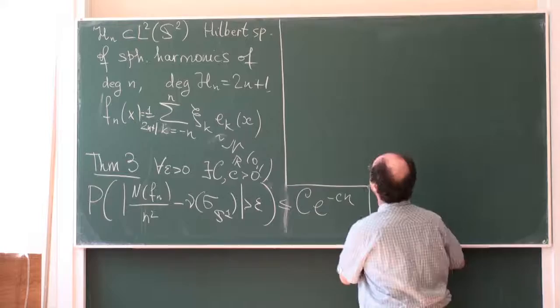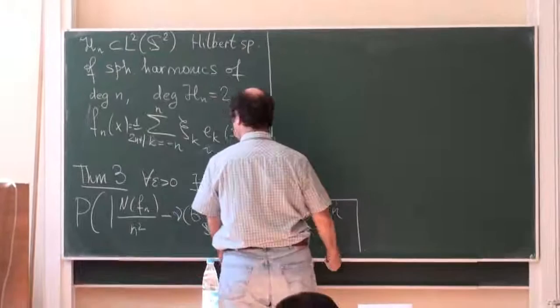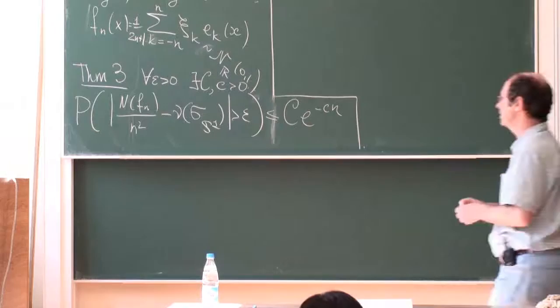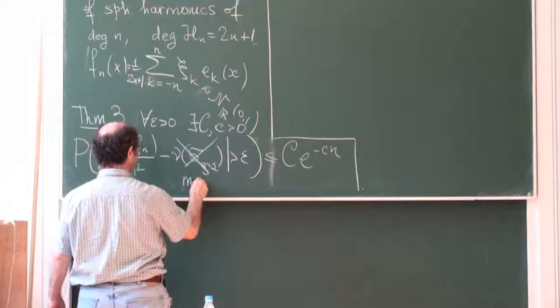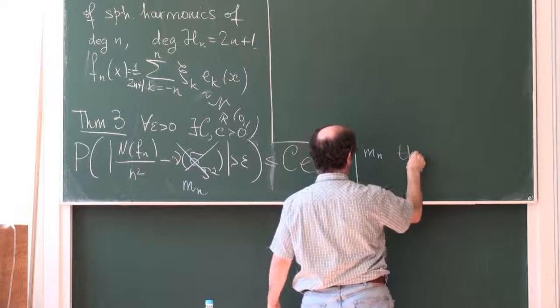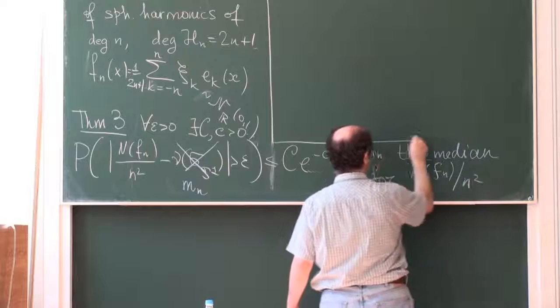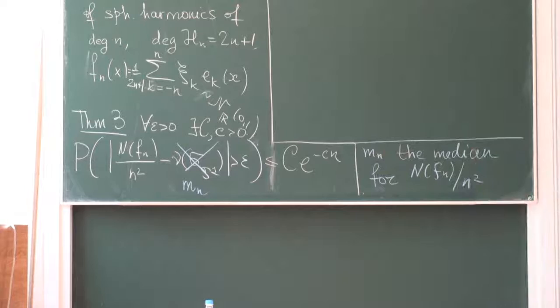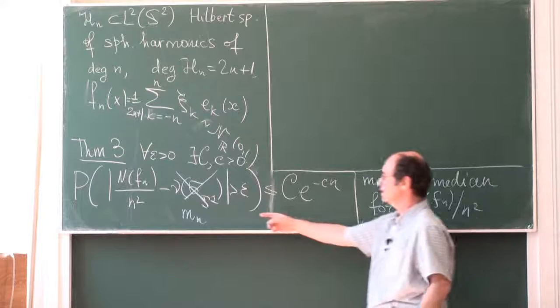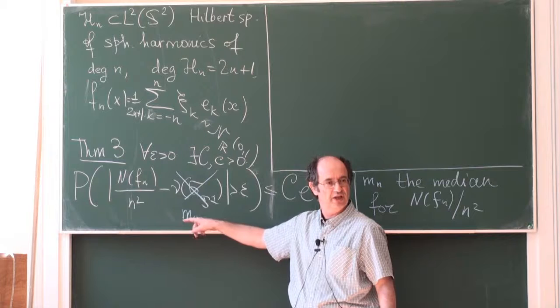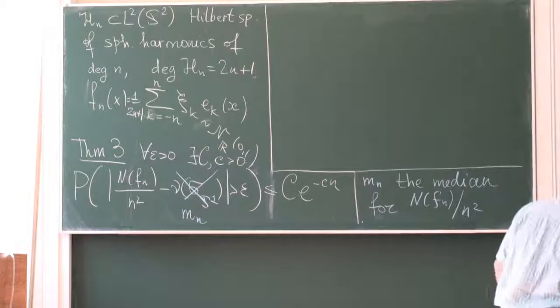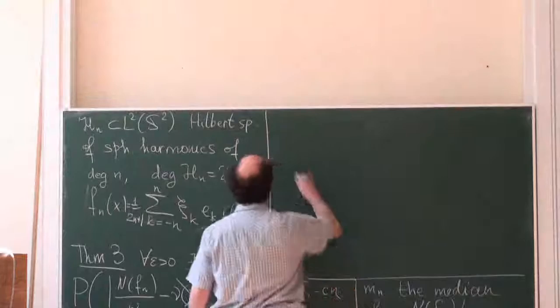Instead, I will prove something different: I will replace the constant by MN, where MN is the median of this random variable. Clearly, if we know this for the median, and we already learned in the first lecture that we have convergence in L1, and if we have this for medians, since medians already converge to the constant, it will be enough. The proof of this is based on Gaussian isoperimetry.